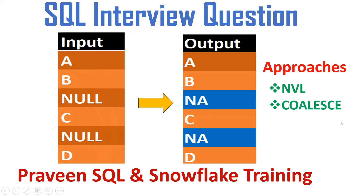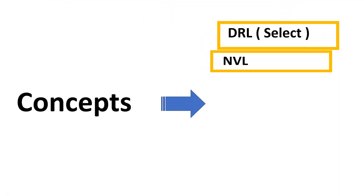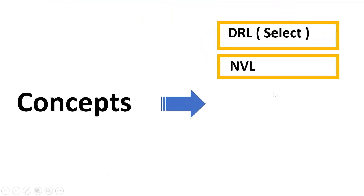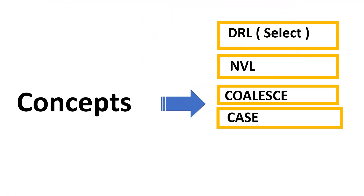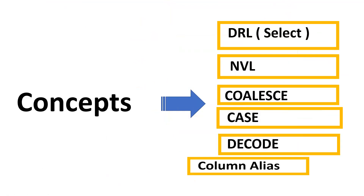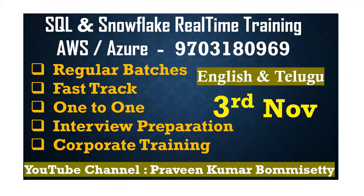The null handling functions we'll use are NVL, COALESCE, and also the CASE statement and DECODE function. To understand this requirement you should have a good understanding of DRL - Data Retrieval Language - that is SELECT. NVL is for null handling; similarly COALESCE returns the first not-null value from a list of columns. The same thing can be done with the CASE statement and DECODE function.